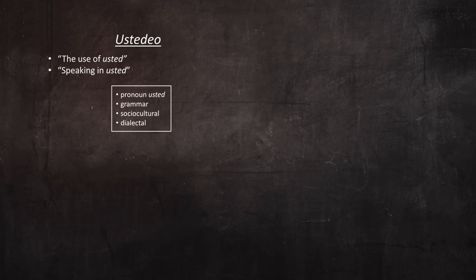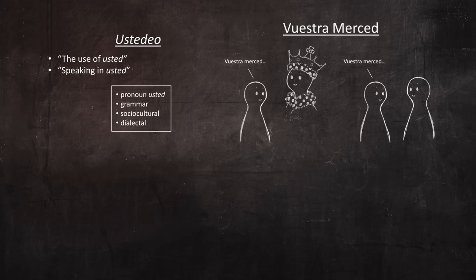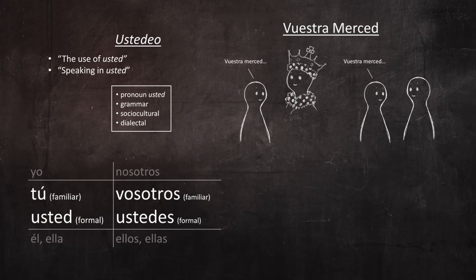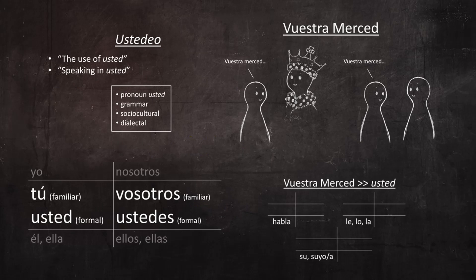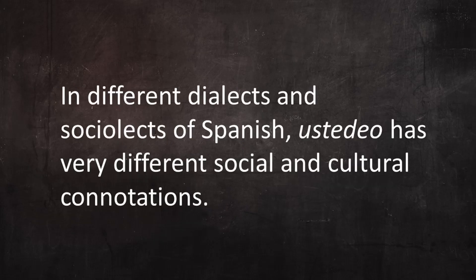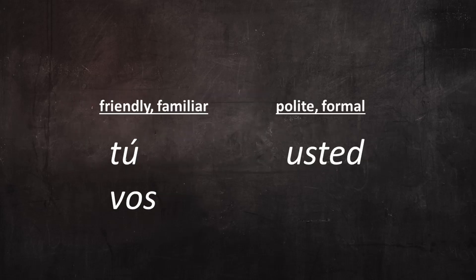In this video we've introduced the concept of ustedeo, talked about where it comes from, what it means, who uses it, and the grammar elements associated with it. But in different dialects and sociolects of Spanish, the use of usted has very different social and cultural connotations, so it's not used the same way consistently throughout the Spanish-speaking world. In the next video, I'll discuss the concept of familiar versus formal address and talk more about how speakers of different dialects decide when to use usted and when to use another form.